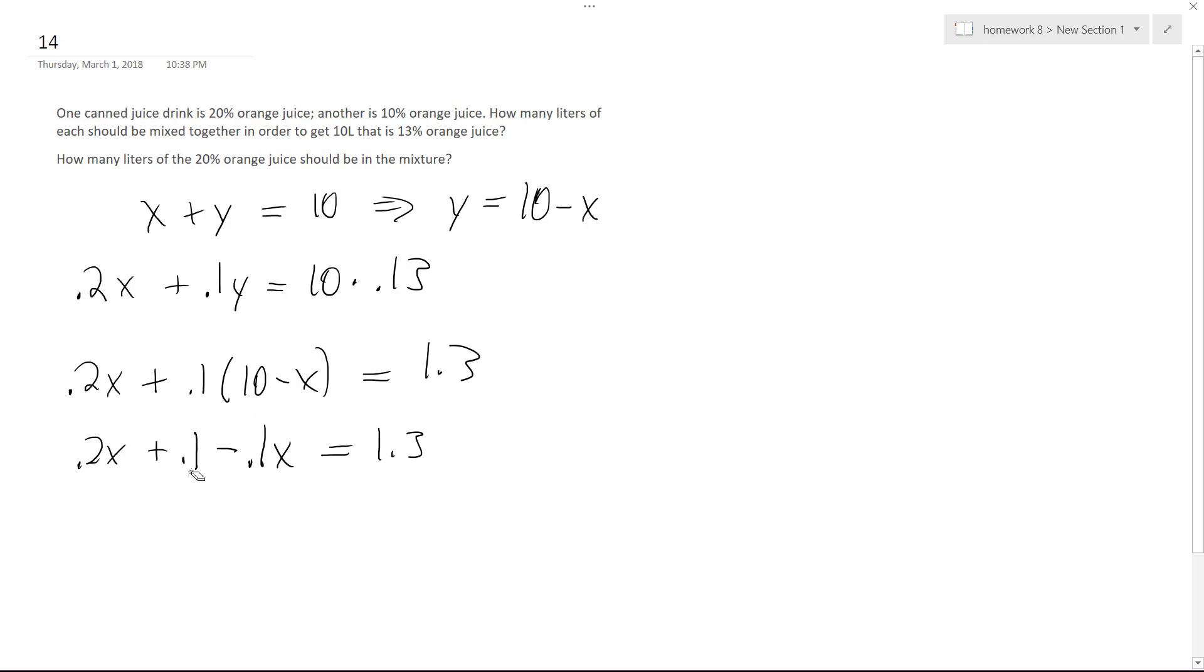Well, it can be backtracked a little bit. So I made a mistake, this shouldn't be .1, it should be 1, that makes a big difference. So minus 1, no wonder it wasn't working out. So .2X minus .1, so I get .1X is equal to 0.3, divided by .1, X is equal to 3 liters.